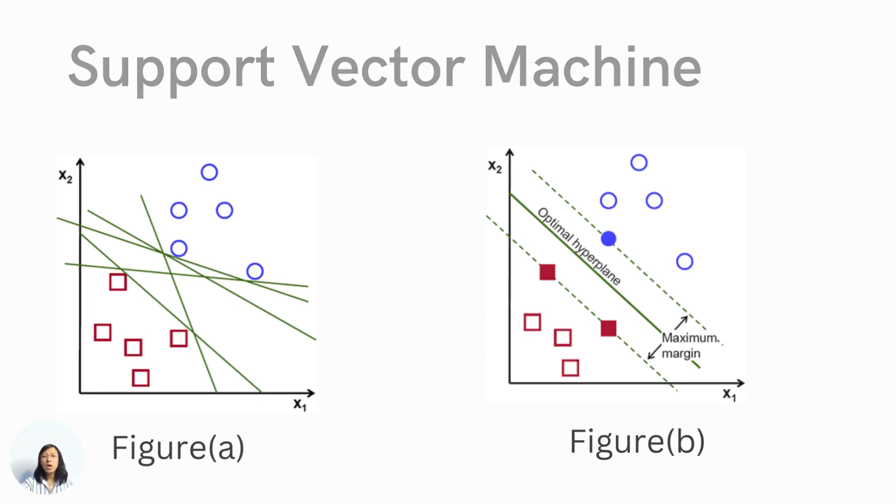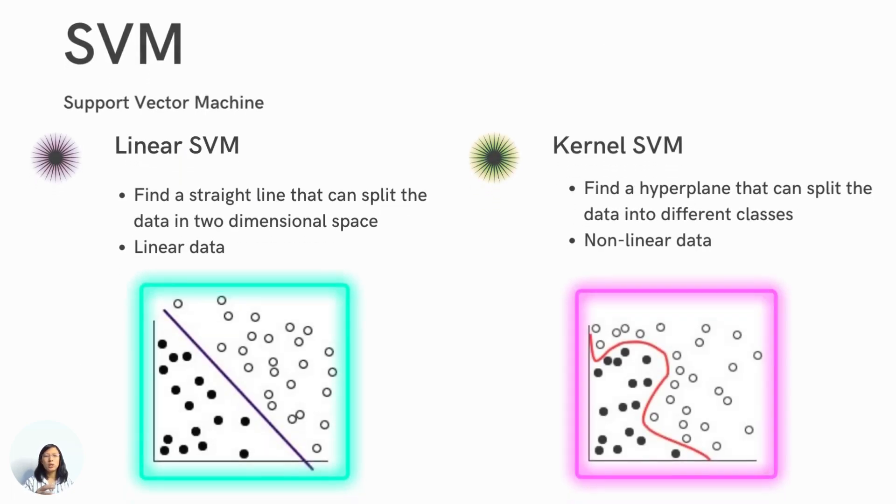So depending on the problem that SVM tries to solve, we can actually simply classify that into linear SVM and kernel SVM. Linear SVM finds a straight line that can split the data, especially in two-dimensional space. This method works well for linearly separable data. In this example, the data are linearly separable.